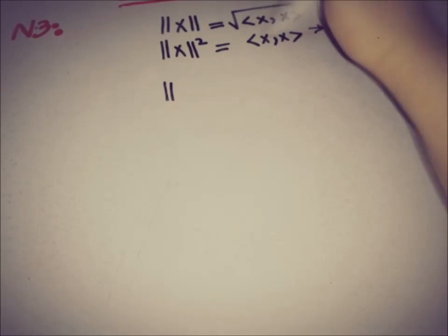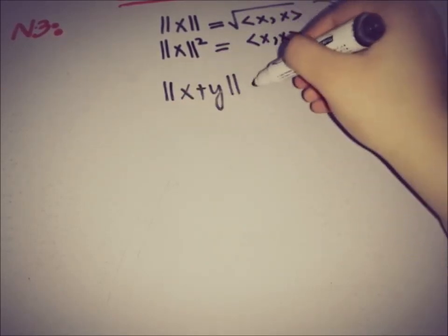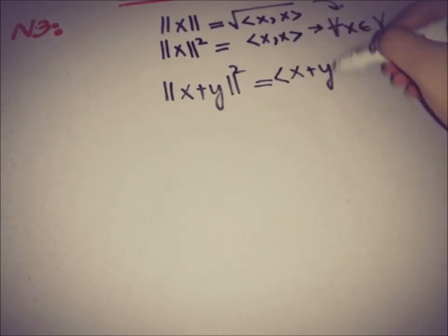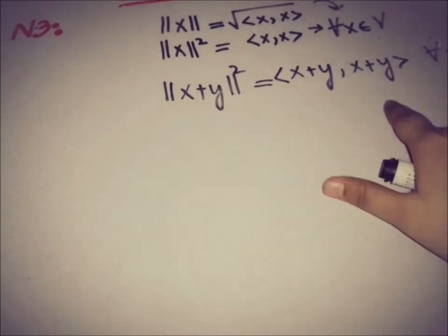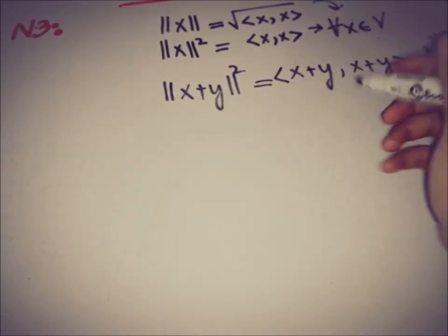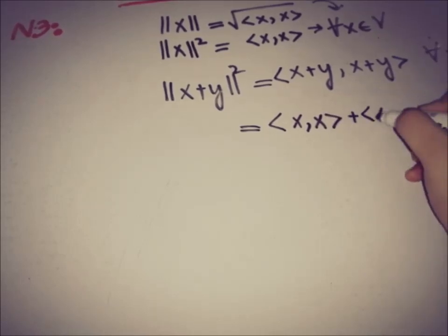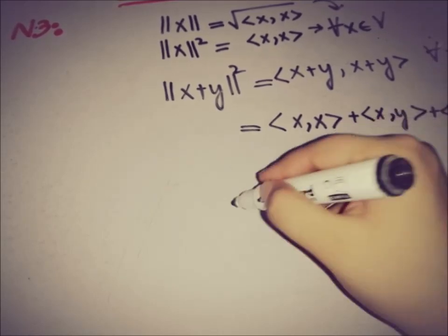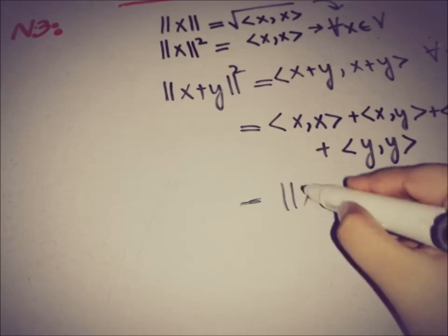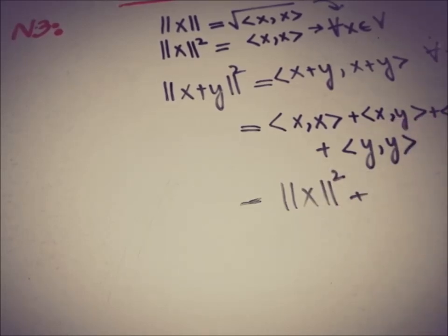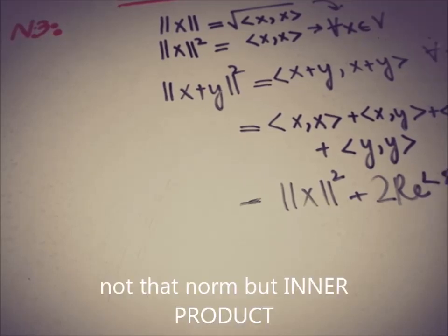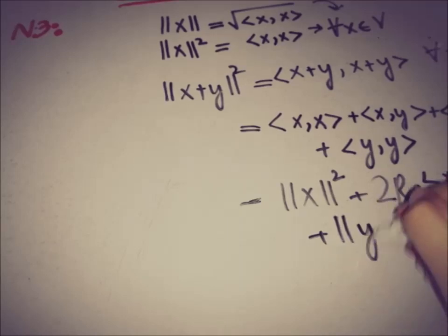Using our relation, if we replace x by x+y we get norm of x+y squared equals the inner product of (x+y) with (x+y). Expanding, this equals the inner product of x with x, plus the inner product of x with y, plus the inner product of y with x, plus the inner product of y with y. The first term is norm of x squared and the last is norm of y squared, so we can write this as norm x² plus two times the real part of the inner product ⟨x, y⟩ plus norm y².